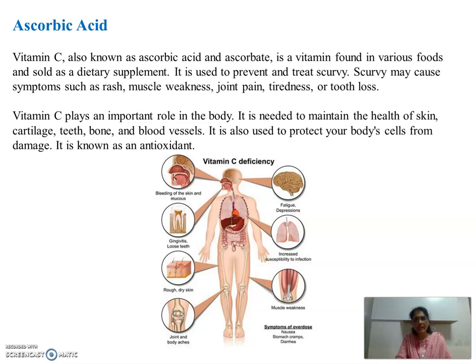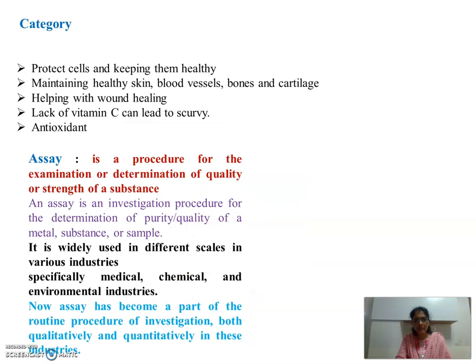It is needed to maintain the health of the skin, cartilage, bones, and blood vessels. It is also used to protect your body cells from damage and is known to be an antioxidant. The lack of vitamin C causes scurvy. It also helps in healing, maintaining healthy skin, blood vessels, bones, and cartilage, and it protects cells and keeps them healthy.